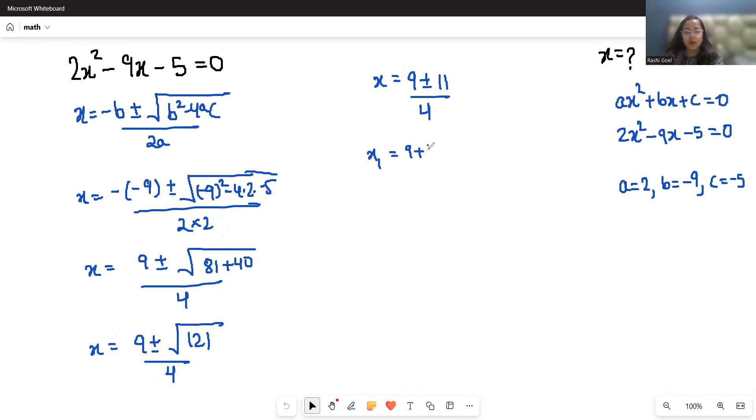So x₁ = (9 + 11) / 4 and x₂ = (9 - 11) / 4. x₁ = 20 / 4, which is 5, and x₂ = -2 / 4, which is -1/2.